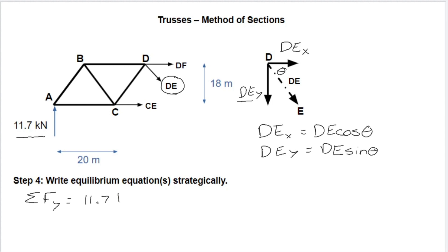So if we do some of the forces in the Y here, we'll have 11.7 kilonewtons upward minus DEY downward. That will equal zero. And we'll know right off the bat that DEY is 11.7 kilonewtons. It is equal to that support reaction at A.